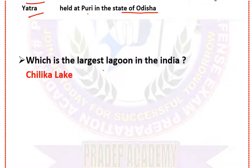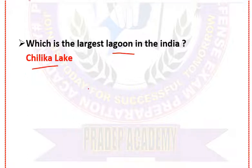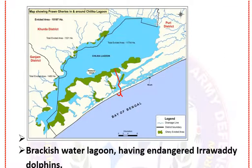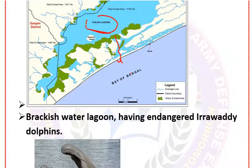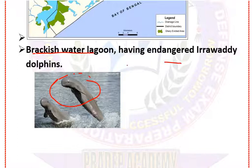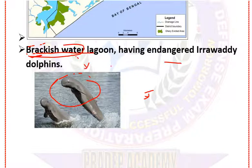The largest lagoon in Odisha is Chilika Lake. A lagoon is a lake directly connected with the sea. In Chilika Lake, the endangered Irrawaddy dolphins are found. Brackish water means water with salinity greater than fresh water but less than sea water. Chilika is a brackish water lake suitable for fishery and fish cultivation.